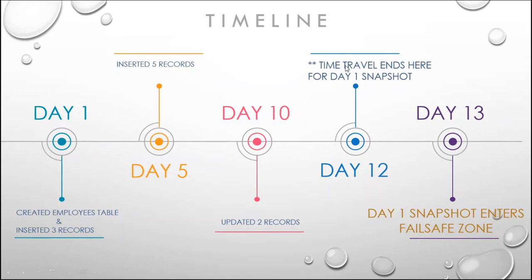On day 12, time travel ends for the day one snapshot. This means that for the employees table created on day one, the time travel period was 12 days. So by the end of the 12th day, the time travel period ends, and on the 13th day the data will be moved into the failsafe zone. Specifically, the snapshot of the data from day one will be moved to failsafe on day 13.